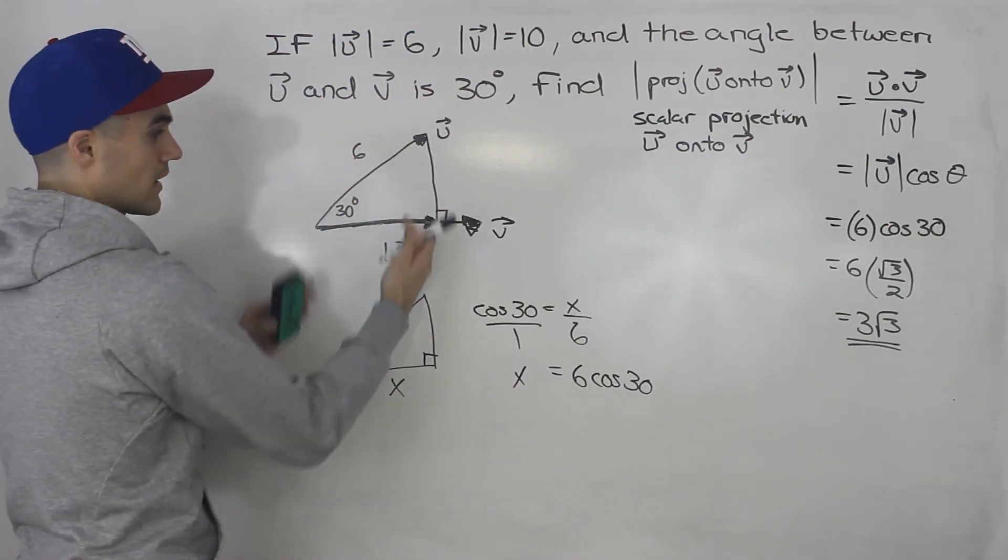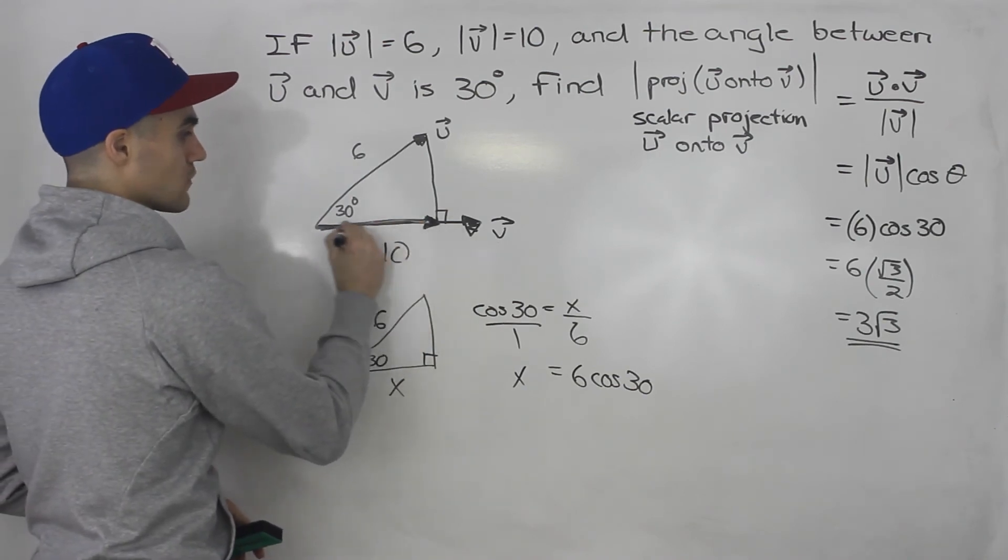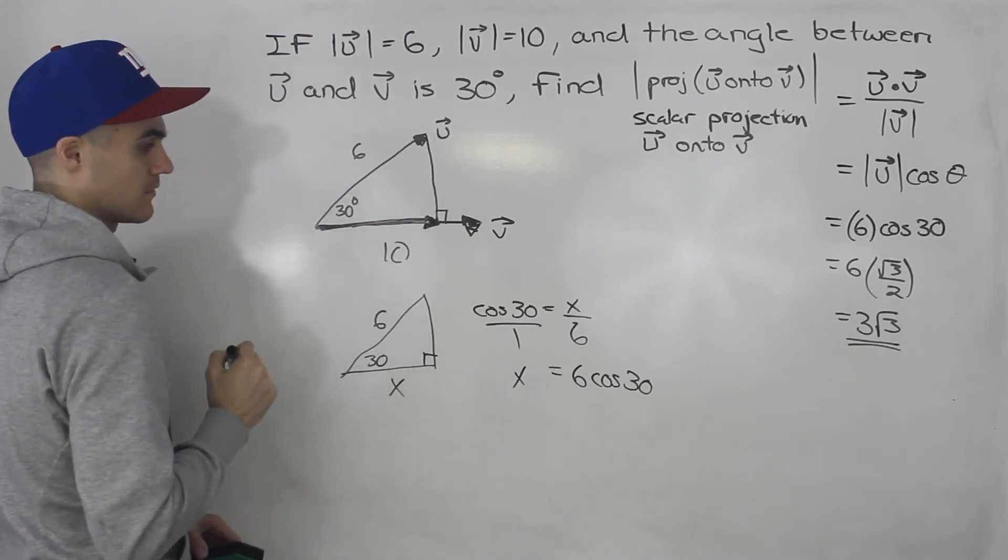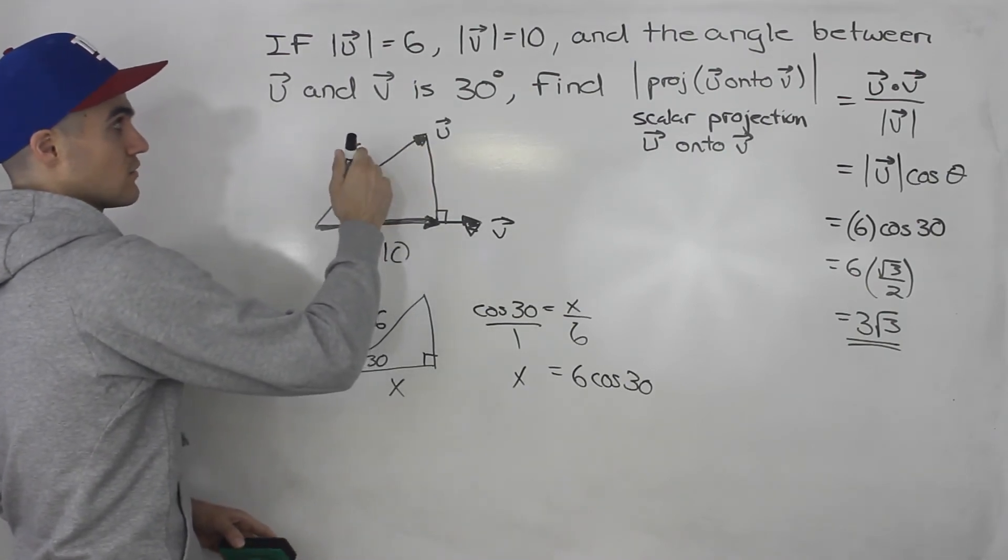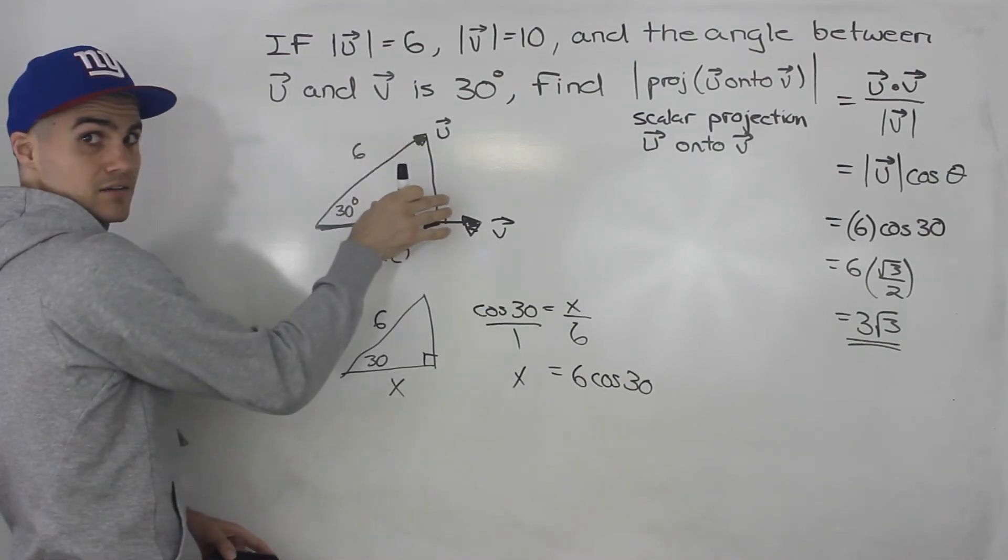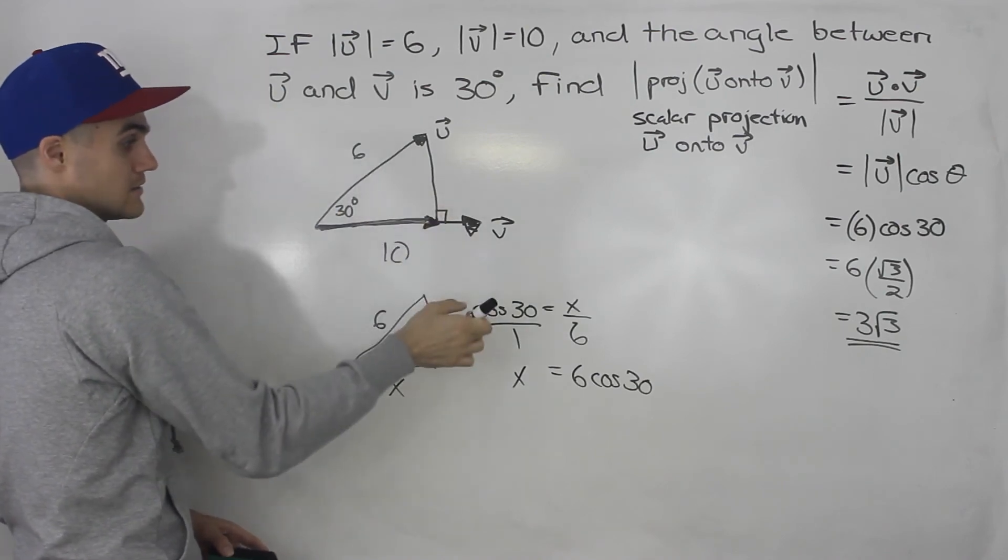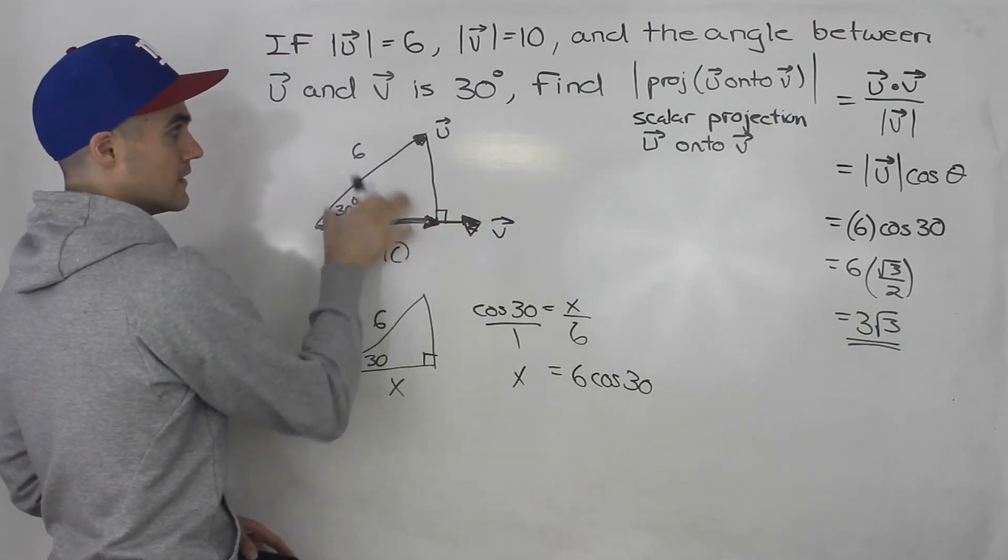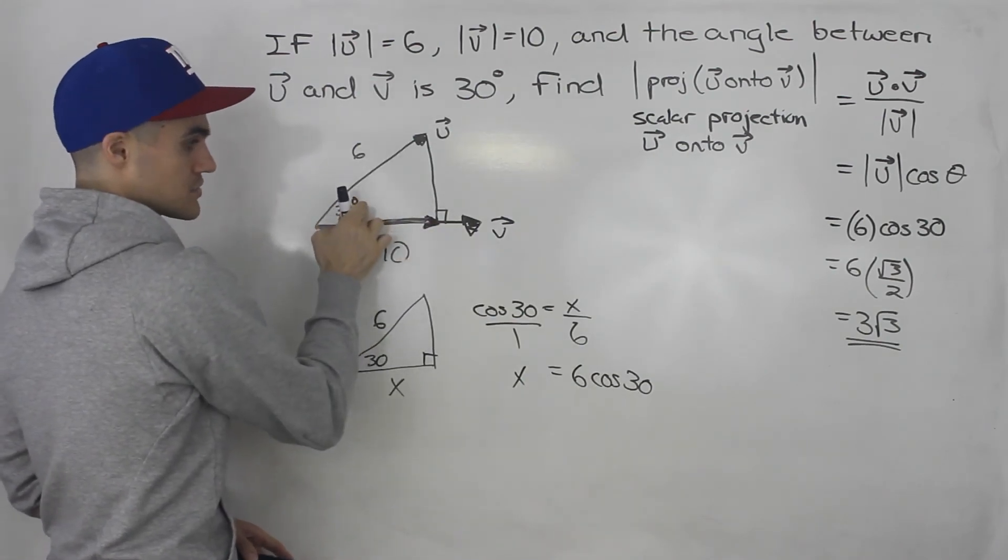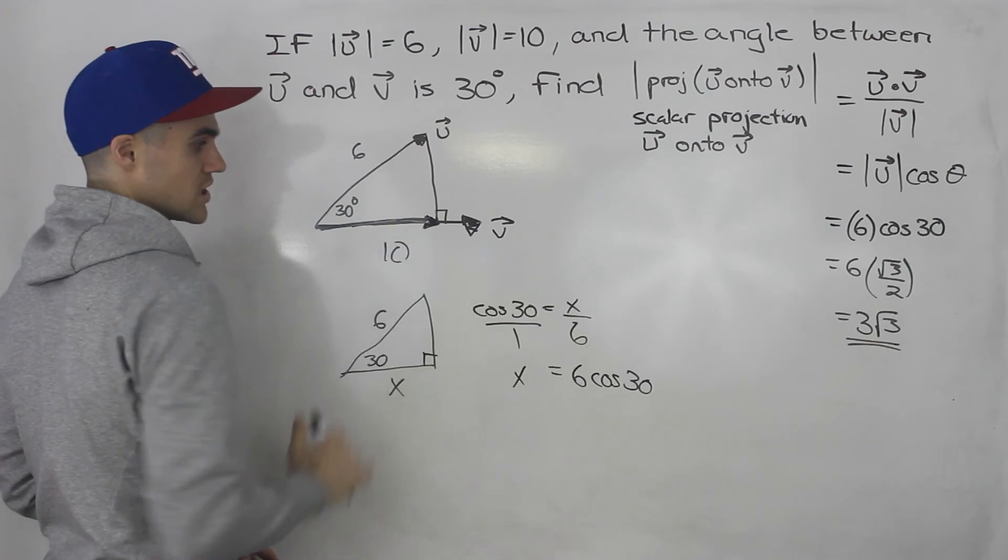They're just basically taking that right angle triangle and solving for that magnitude for this vector over here. And it's always the hypotenuse. So the vector that's getting projected onto the other one, the magnitude of it. So in this case, it's 6, because u is going onto v. So 6 times cos 30, because it's always going to be that adjacent side.